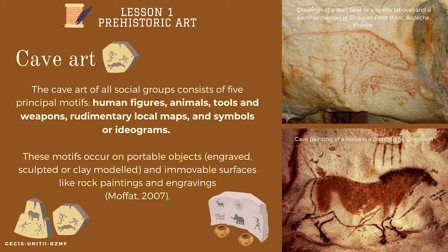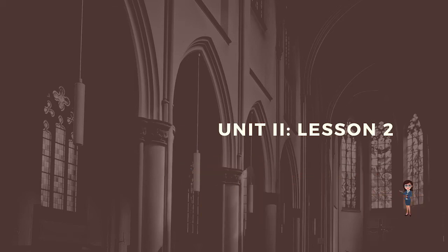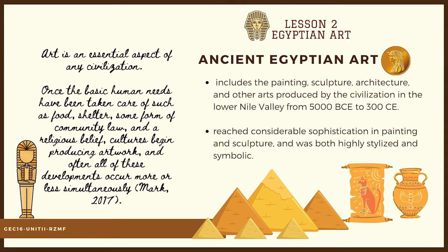We now go to Lesson 2, Egyptian Art. We know that all of us are familiar with Egypt including its pyramids and sand dunes, but do you know that they also have very interesting art? Art is an essential aspect of any civilization. Once the basic human needs have been taken care of — such as food, shelter, some form of community law, and a religious belief — cultures begin producing artwork, and often all of these developments occur more or less simultaneously.